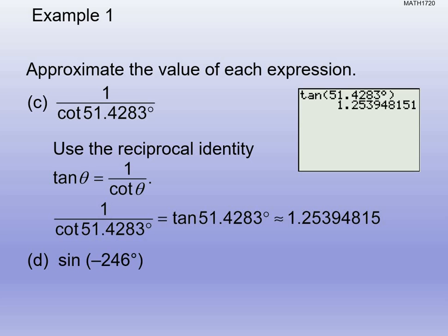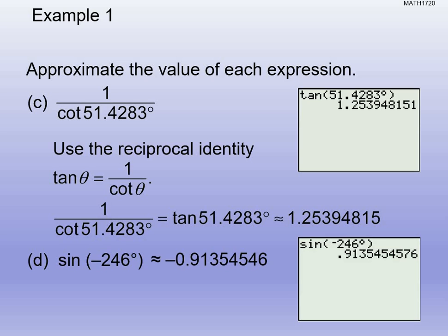For sine of negative 246 degrees, the answer is approximately positive 0.9135. The negative is not in the answer because negative 246 degrees ends up in the second quadrant — remember 'all students take calculus' — and the second quadrant is where sine is positive. So sine of negative 246 equals 0.9135.